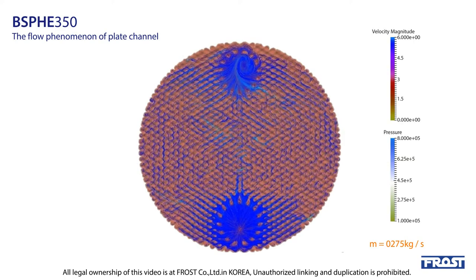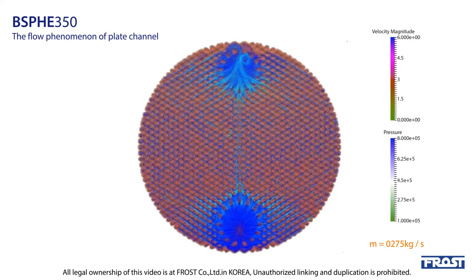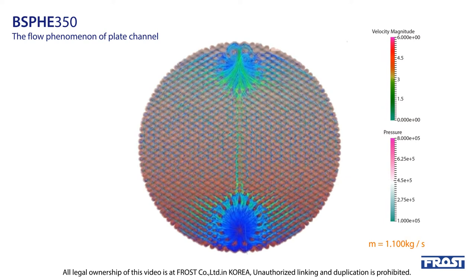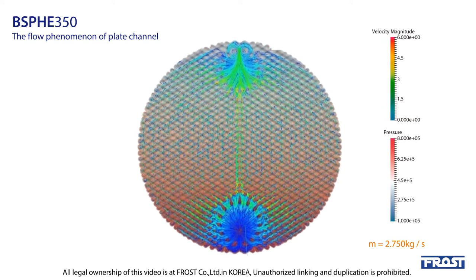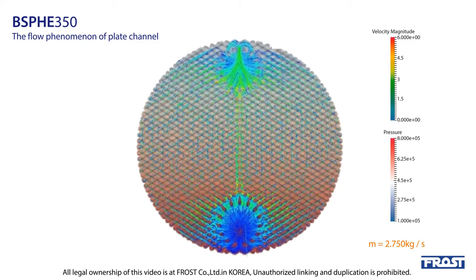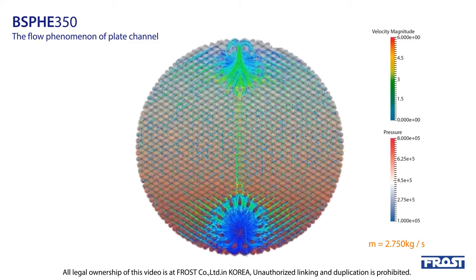These images now show the flow phenomenon of Plate Channel for Frost inside when the mass flow rate is as following. First: 0.275 kg per second. Second: 1.1 kg per second. Third: 2.75 kg per second.